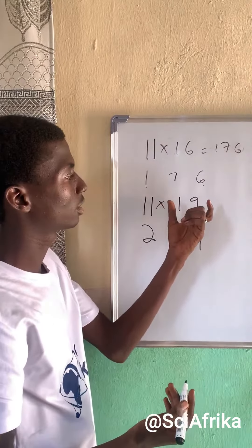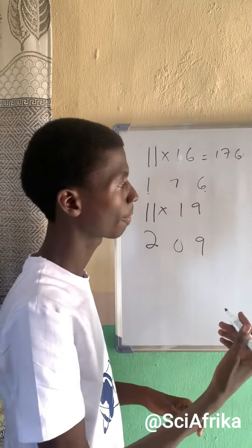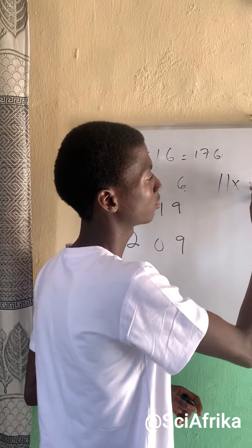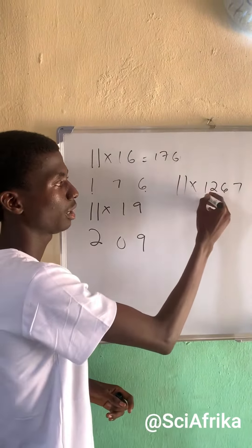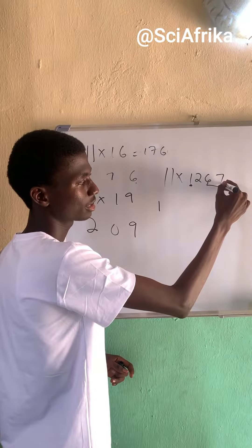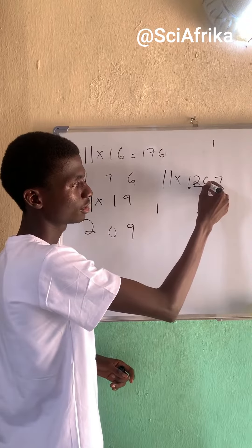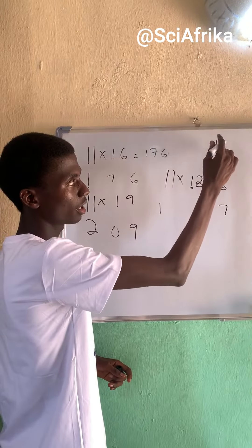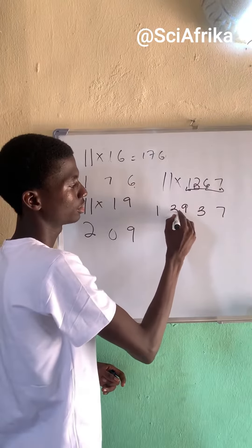What am I considering the digits? 11 times 1267. The first number is 1, last number is 7. Then 6 plus 7 is 13, so write 3 and carry 1. Then 2 plus 6 is 8, plus 1 carried is 9. So write 9. And 1 plus 2 is 3. So, the answer is 13,937.